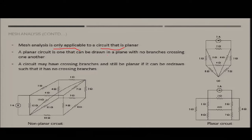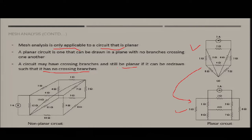Here you can see that the 4-ohm resistor branch and the 5-ohm resistor are crossing each other, making it a non-planar circuit. A circuit may have crossing branches and still be planar if it can be redrawn without any crossings. By moving the 5-ohm element and reconnecting it differently, you can convert this non-planar circuit into a planar circuit where all branches, loops, and node connections remain the same.